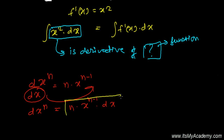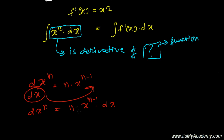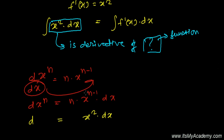So the derivative of x to the power n is n times x to the power n minus 1. We need to find whose derivative is x squared. Here x to the power n minus 1 corresponds to x squared, and by comparing: when it is n minus 1 equals 2, then n equals 3. If it is 2, n should be 3 — one more than 2. And the same number n will appear as the coefficient.